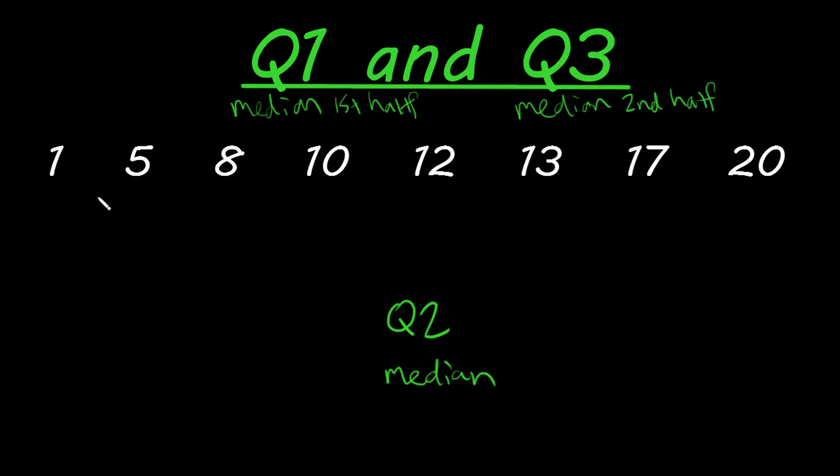To find the median, we need to eliminate one from each end because we have an even number. So this leads us to our median, which is going to be in between 10 and 12. And so we know our median or Q2 value is going to be equal to 11.